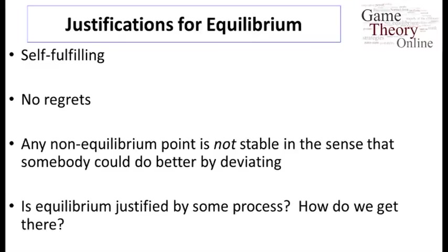When we talk about randomization later on, it could be that if players are randomizing, the realization they get is ex-post something they'd want to change, but they don't regret the strategy they're taking in its basic form. Along with this, any point that's not in equilibrium is not stable, in the sense that somebody could do better by changing their action — there's an improving deviation from any non-equilibrium point. While it might not be obvious in some circumstances that everybody realizes what an equilibrium point is, any non-equilibrium point should eventually unravel if players are maximizing and pushing in directions that improve their utilities, so non-equilibrium points are more ephemeral than equilibrium points in some basic sense.